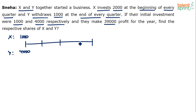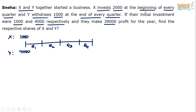So we have quarter 1, quarter 2, quarter 3, and quarter 4. You don't have to do this in the exam — I'm just explaining neatly so you can follow. When they start they have invested 1,000 and 4,000. Now, X invests 2,000 at the beginning of every quarter.